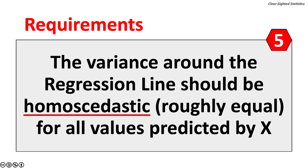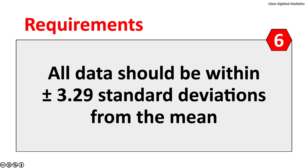Fifth, the variance around the regression line should be homoscedastic, which means roughly equal for all values predicted by the independent variable X. Sixth, outliers can distort the correlation. All data should be within plus or minus 3.29 standard deviations from the mean.